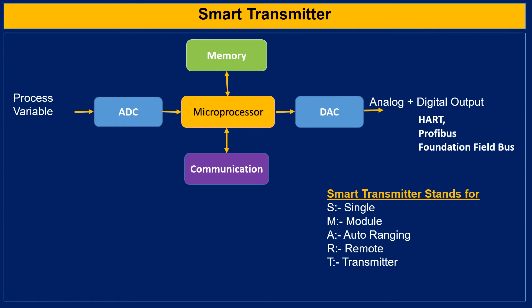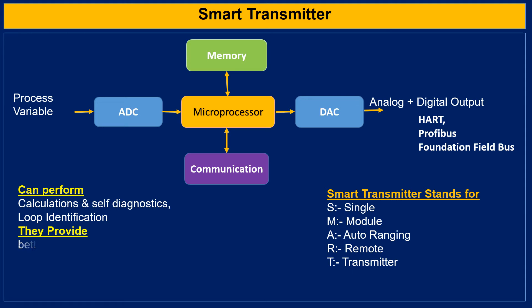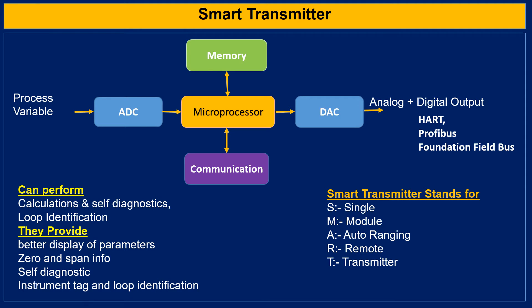Smart transmitters utilize a microprocessor and memory as their internal units. These transmitters can perform calculations and self-diagnostics. They provide a better display of parameters, zero and span information, self-diagnostic instrumentation tag or instrumentation loop identification. They have the additional capability of digital communication along with 4 to 20 mA signals over a two-wire loop system.